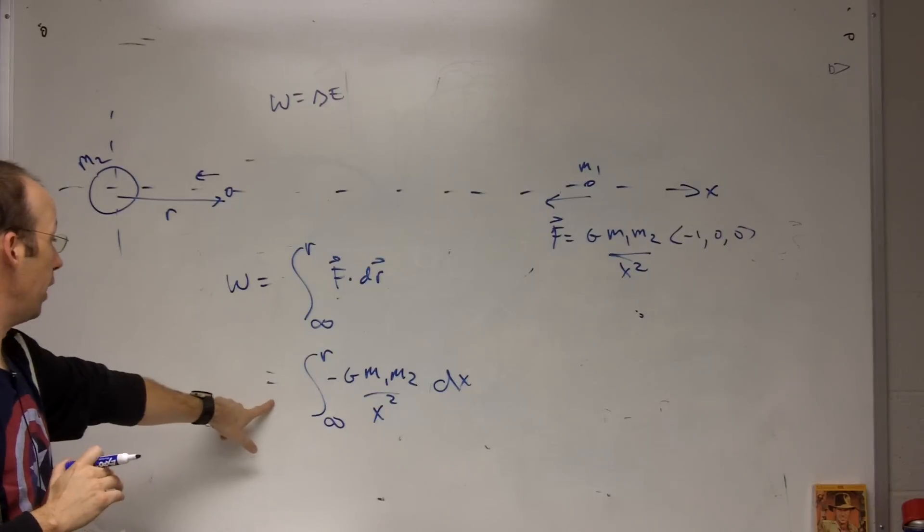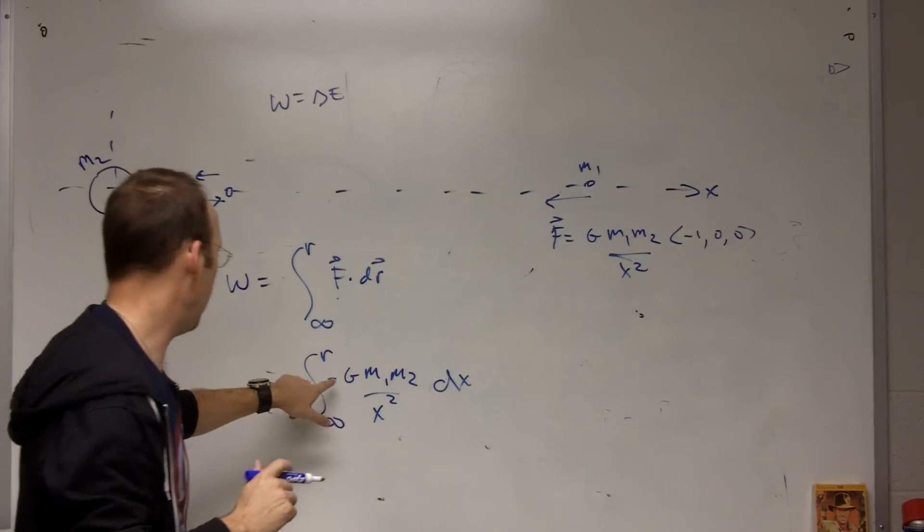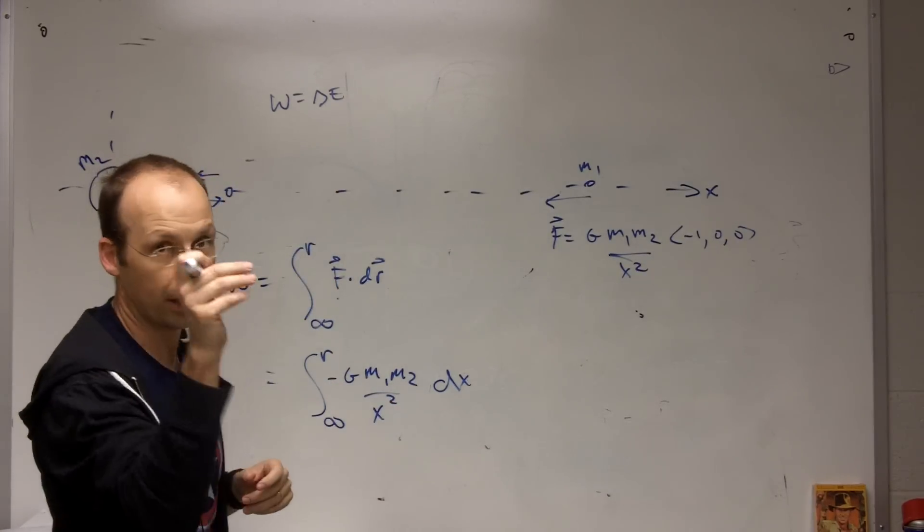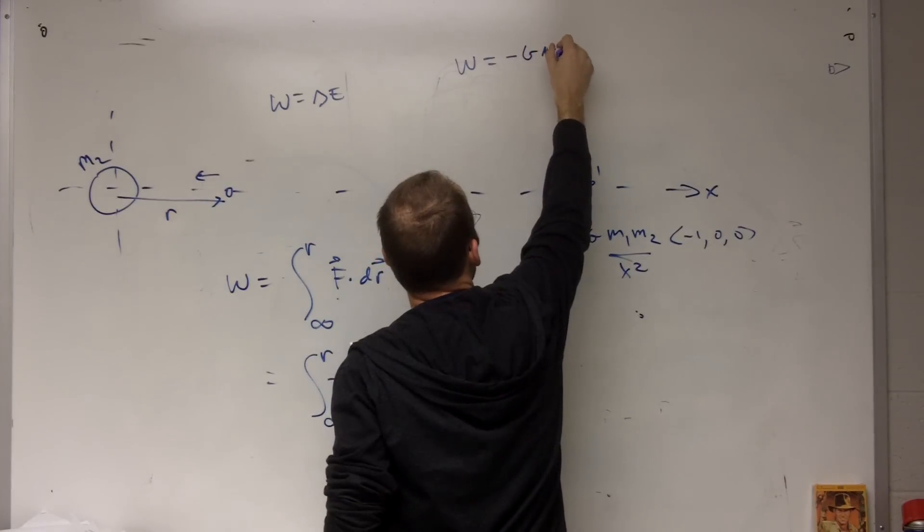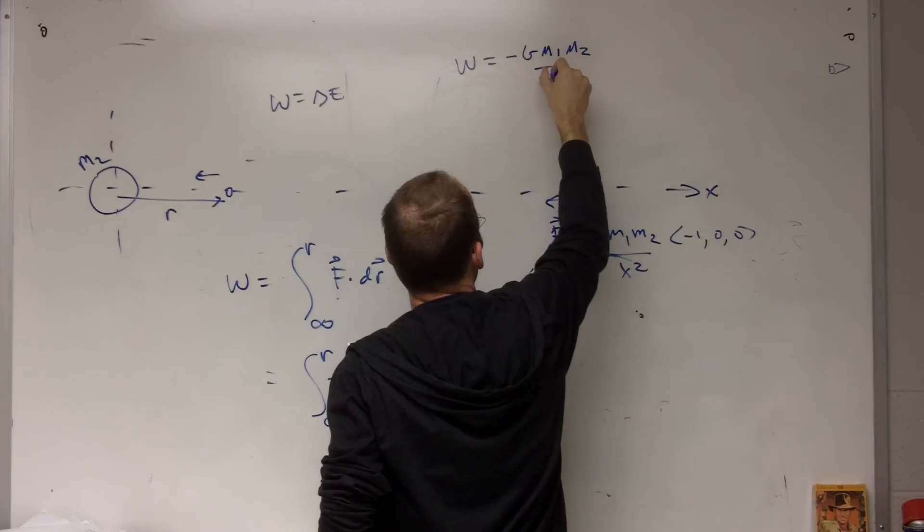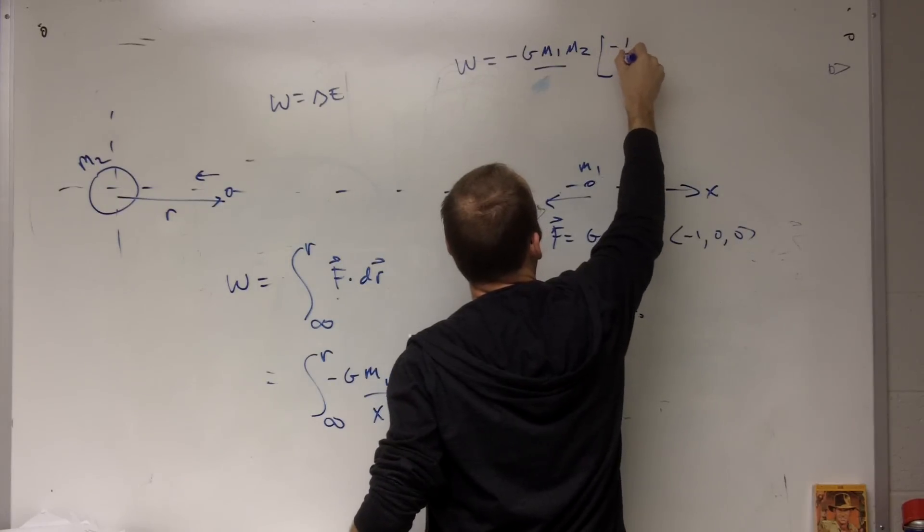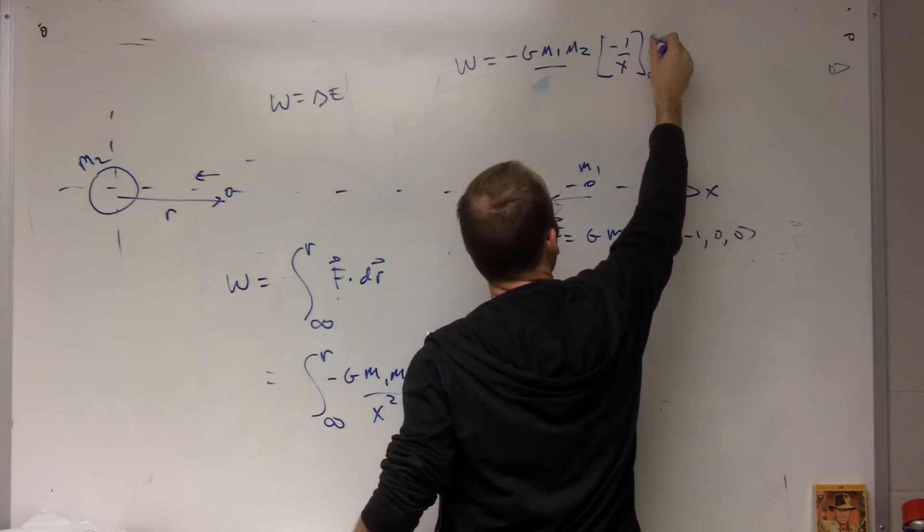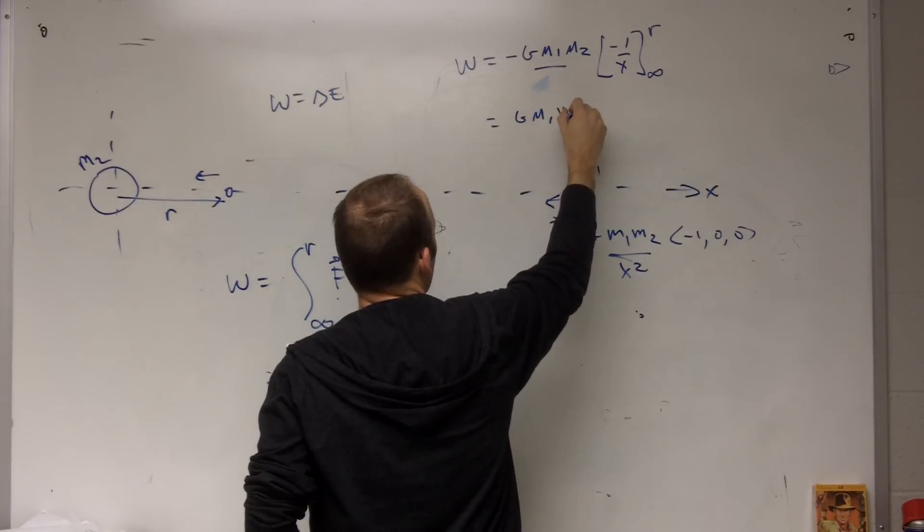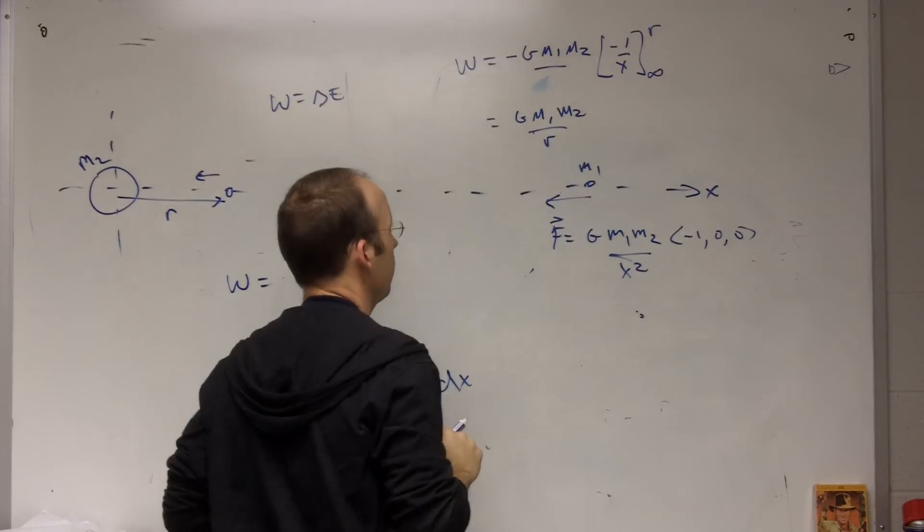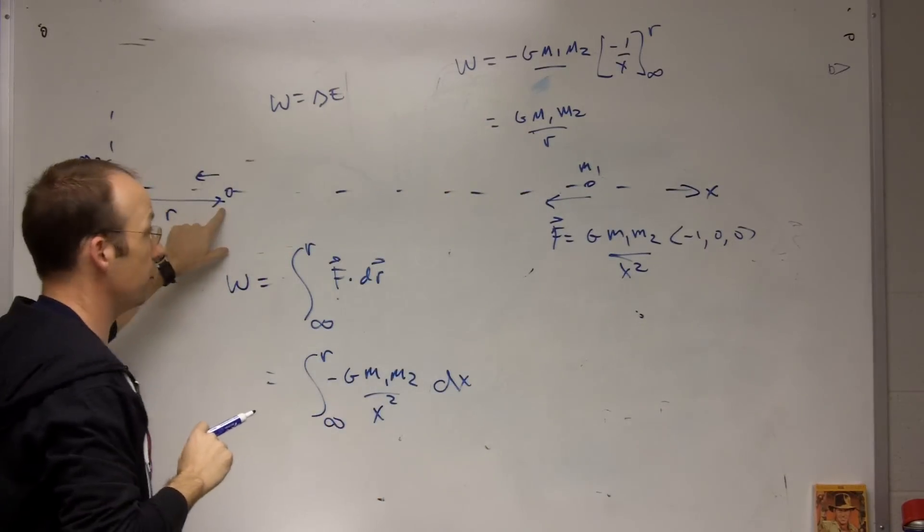Okay, so if I integrate this, g m1 m2 is a constant, and I integrate 1 over x squared dx, I get negative, negative, so that's going to, oh dear, yes, I'm okay. Okay, so I get work equals, I'll just write it out, I have the negative g m1 m2 over x, let me write this over here, times negative 1 over x, from infinity to r. So I get the work done is g m1 m2 over r minus 0, because if I take the limit as x goes to infinity, I get 0. So this is a positive amount of work done on the object as it moves to this position r.